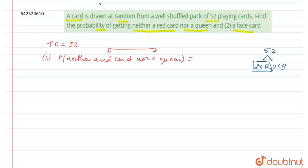Let us count the number of queens. We have a total of four queens in which two are red and two are black. These two red queens are already included in this 26 pack of red cards, so we just need to count these two black queens. So we have a total of 26 plus 2, that is 28 non-favorable outcomes.